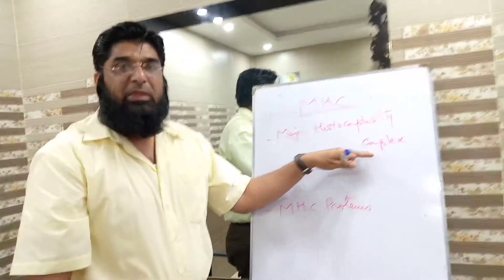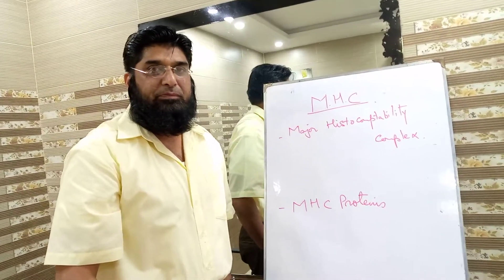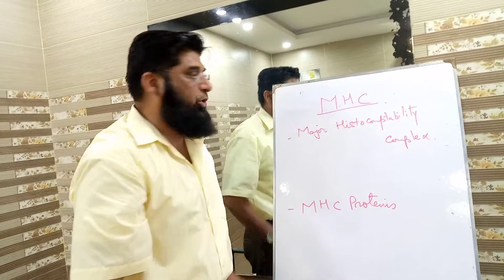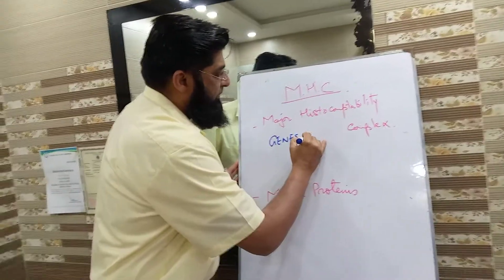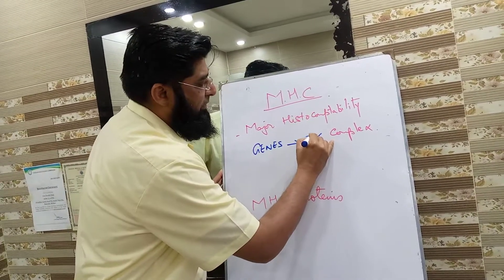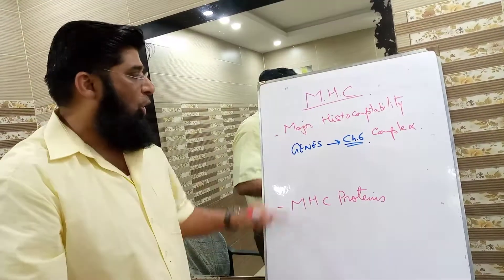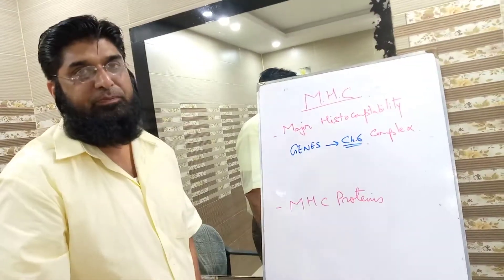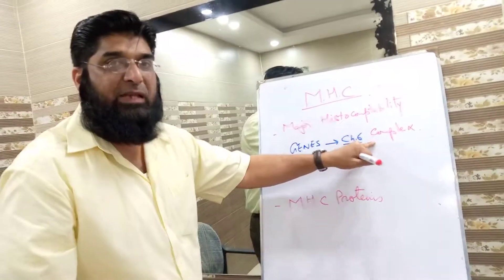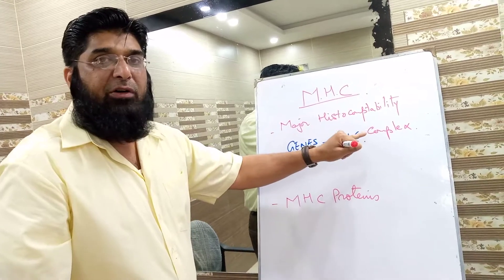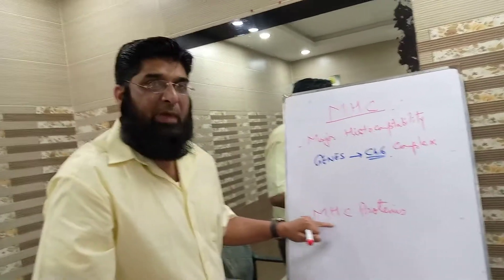The Major Histocompatibility Complex indicates different types of genes which are located on chromosome number 6. These major histocompatibility complex genes are responsible for the coding of MHC proteins.